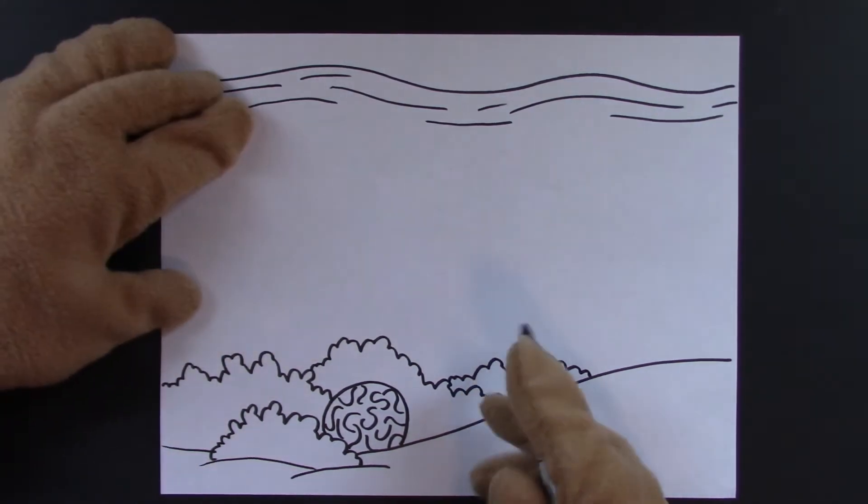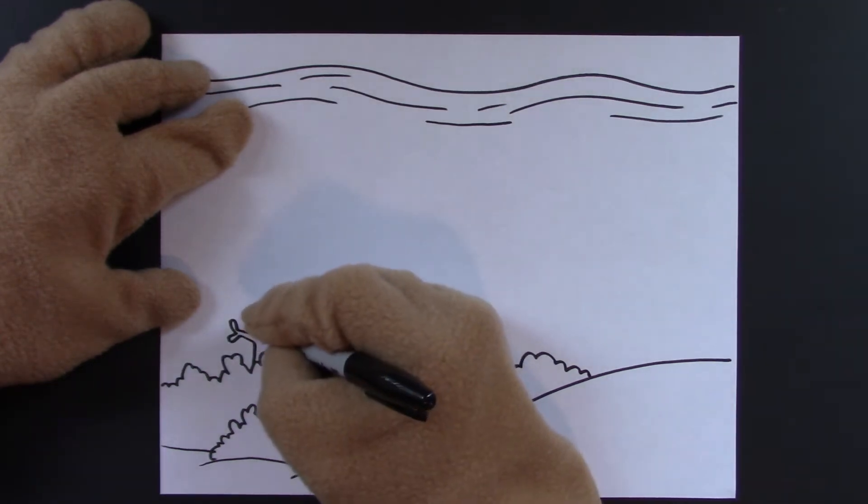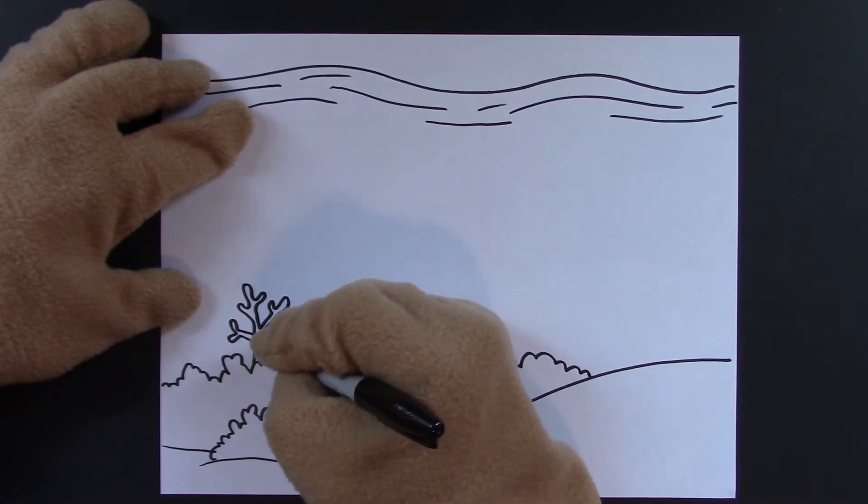Now, the coral that we drew before that looks like sticks, let's put one of those right here. And they look like little branches and arms. And you just sort of randomly make them up. And just keep going until you come back down.